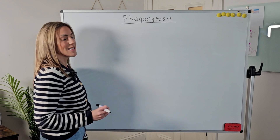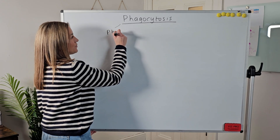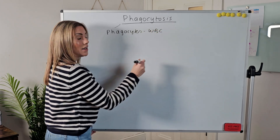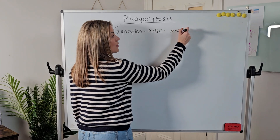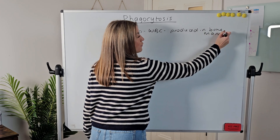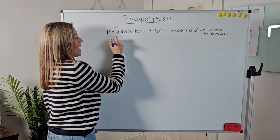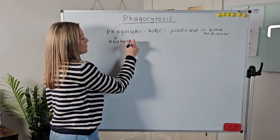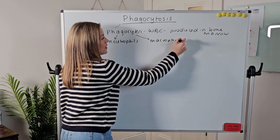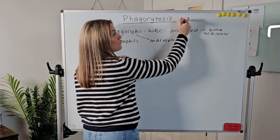First things first, phagocytosis uses phagocytes. Now phagocytes are a type of white blood cell. They are produced in the bone marrow and there are different types of phagocytes — you may hear of neutrophils and you may hear of macrophages. They are both examples of phagocytes which can engulf and destroy.